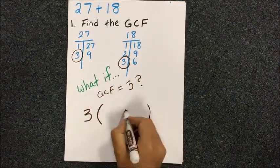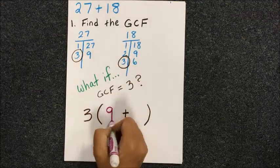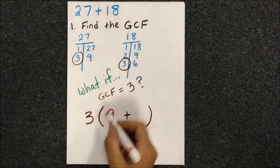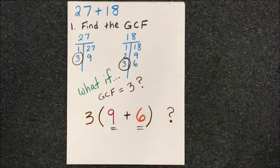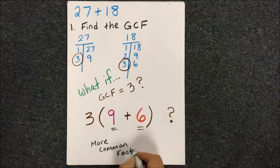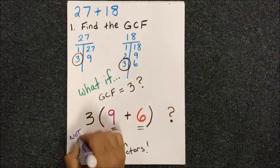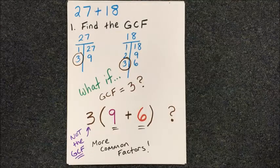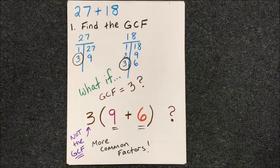We'll have 3 times another sum. We can still multiply 3 times 9 to get 27 and 3 times 6 to give us 18, so it looks like it could work. But the problem is that between 9 and 6, we still have more common factors. 3 is another common factor on the inside, which tells us we did not actually find the greatest common factor on the outside. This is the whole point why we use the distributive property - to see if we found the GCF.